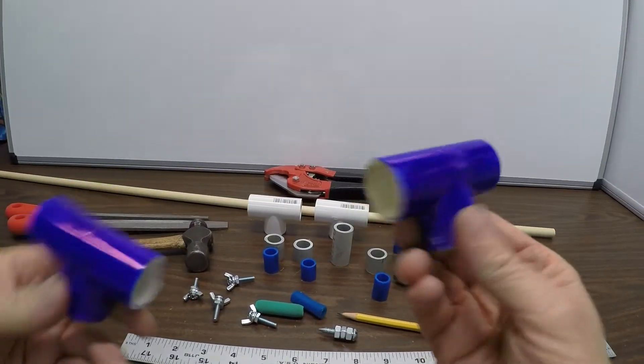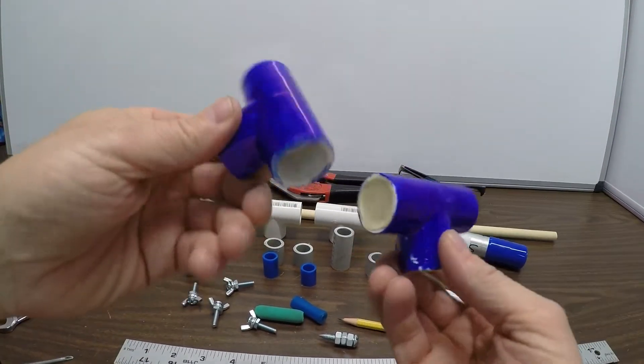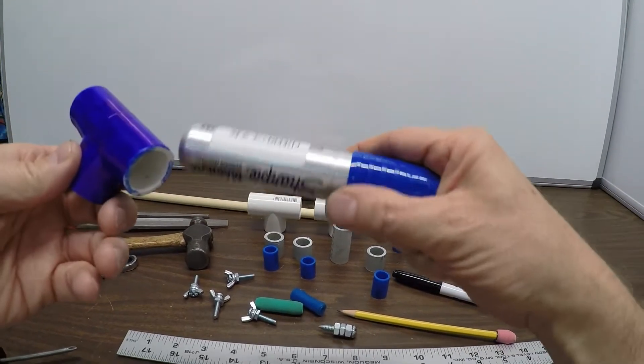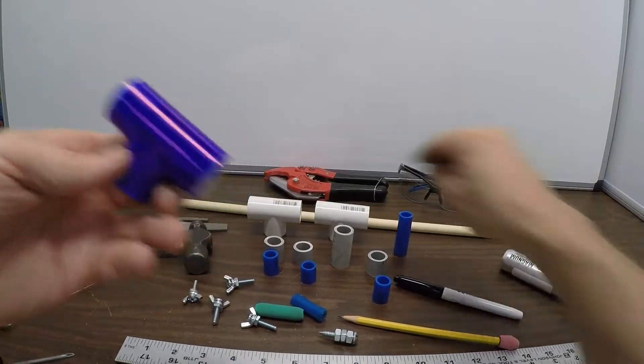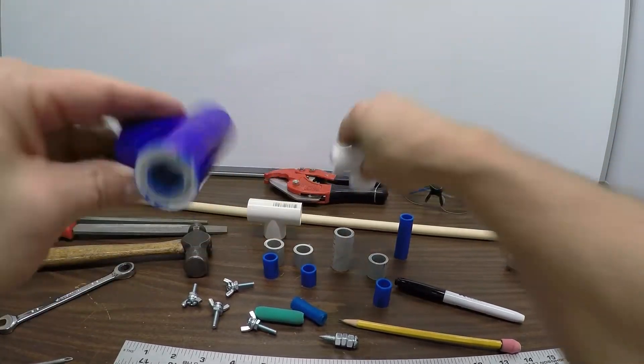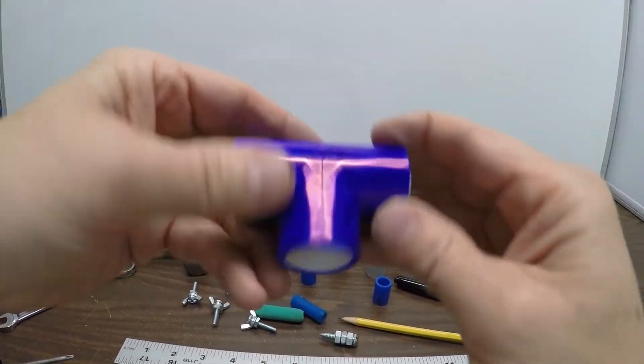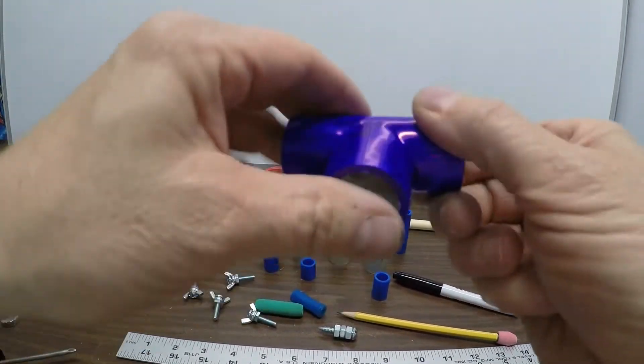And I've been working with using markers versus paint. So I took a permanent Sharpie marker and I took the tees and just marked them up. Gives it a little bit of shine. It's a little different from paint.